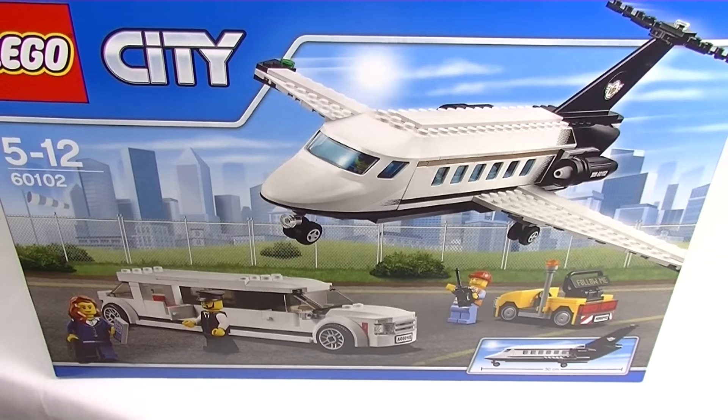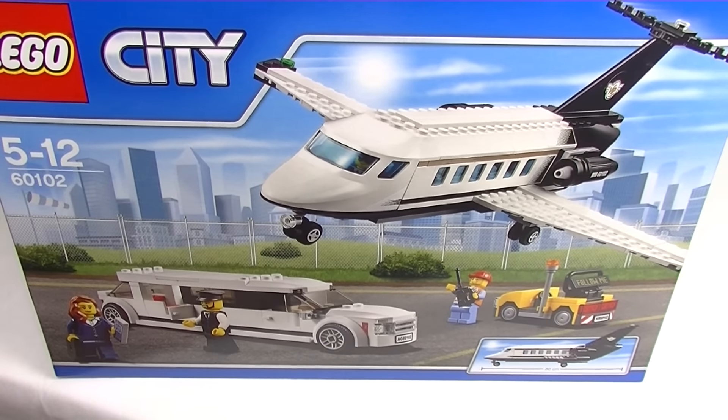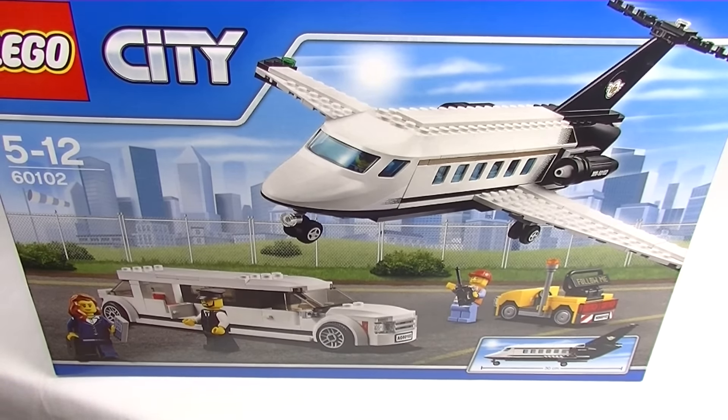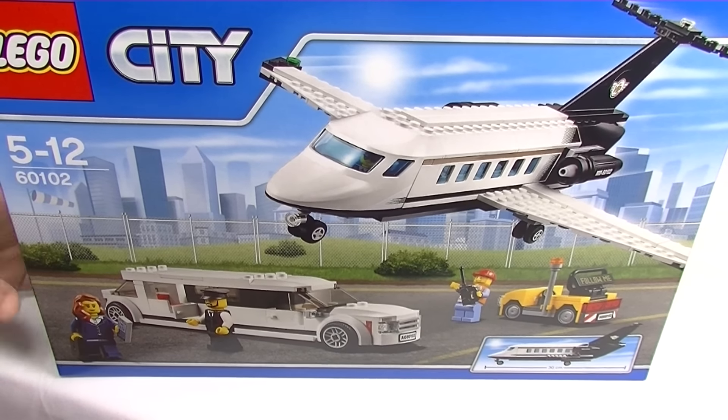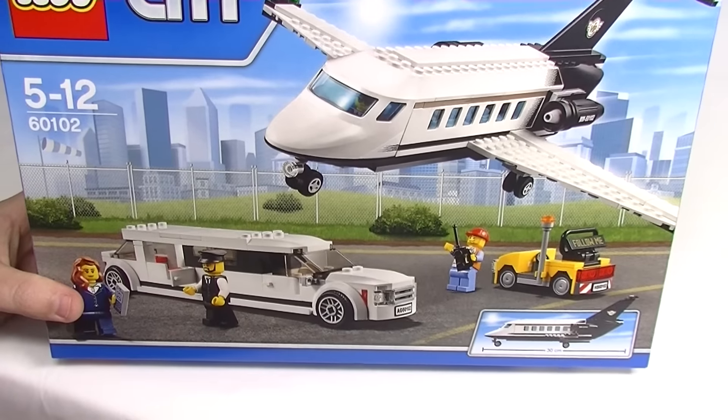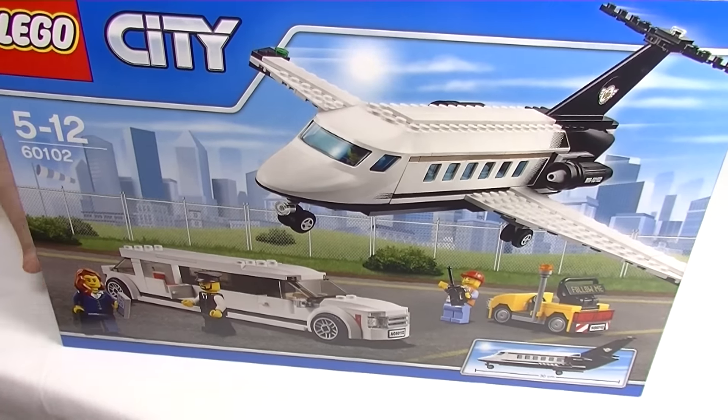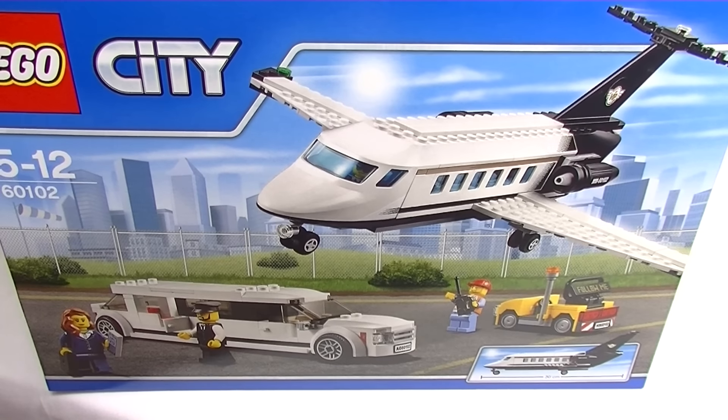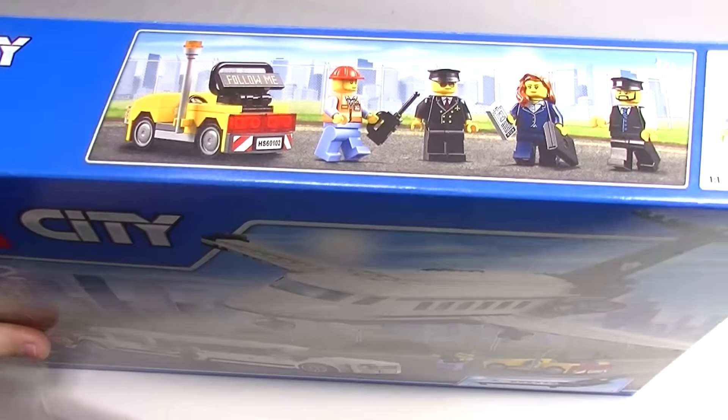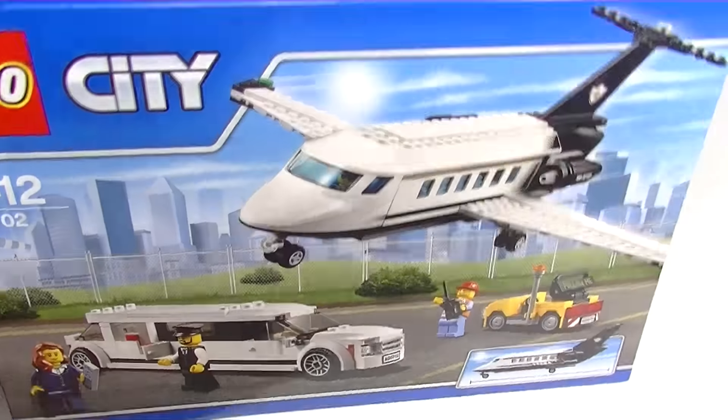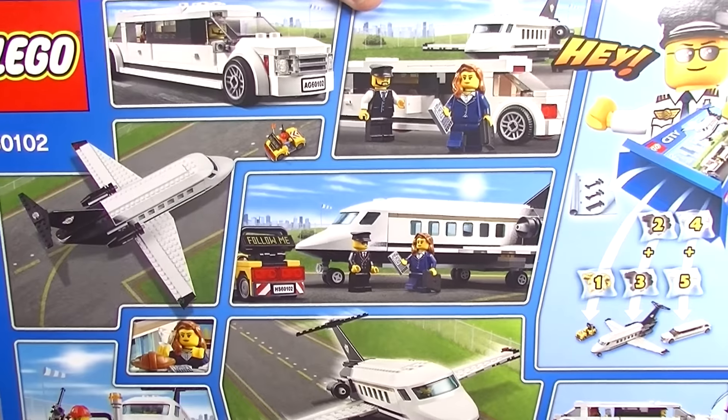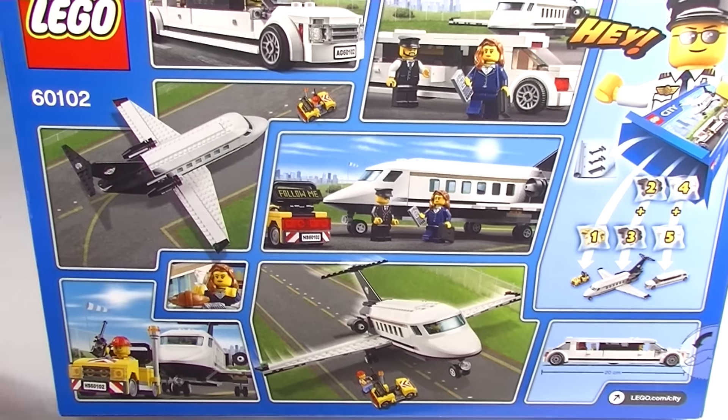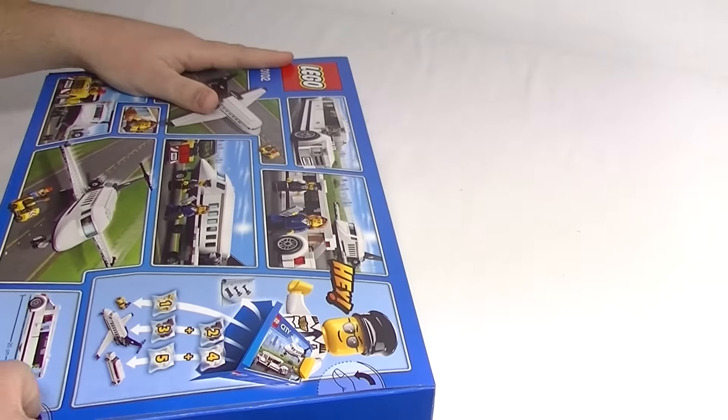G'day YouTube, Down to Bricks here. We're gonna get stuck into a Just Build It video today. I am just going to build this set, so this is set 60102, Airport VIP Service. It's around 360 odd pieces. Let's have a bit of a look at the box, checking out the back. Lots of good little play features in this, but let's get stuck into it.